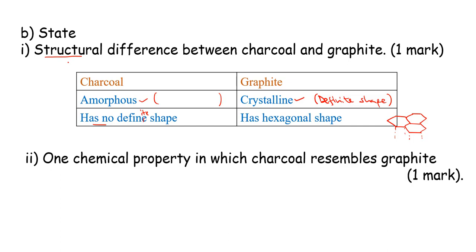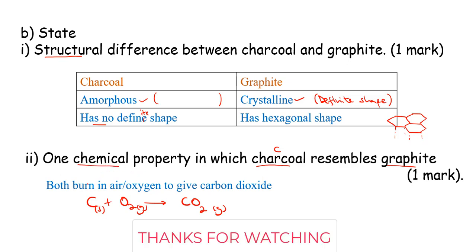Name one chemical property in which charcoal resembles graphite. Now for this one, we both know that charcoal and graphite are both made up of carbon atoms. So if we burn one of them in oxygen, we shall obviously form carbon dioxide gas. So they both burn in air to form carbon dioxide gas. That's a good chemical property because with chemical properties we are looking at chemical reactions. How does it react with other elements? And in this case, it's easier to deal with oxygen.